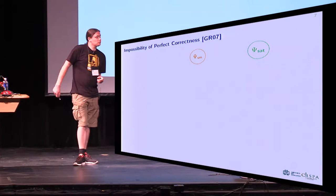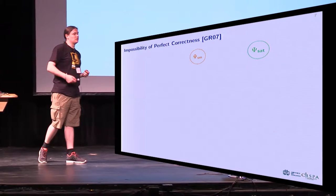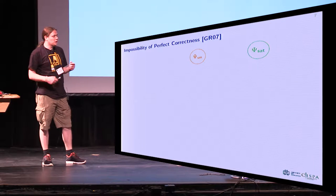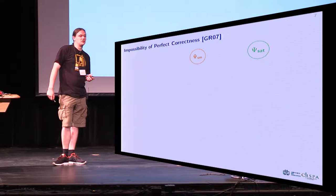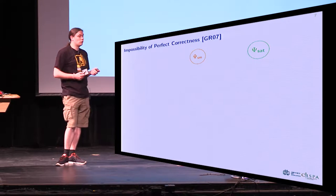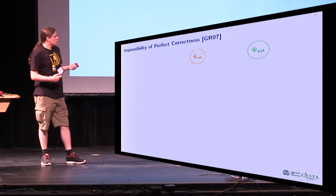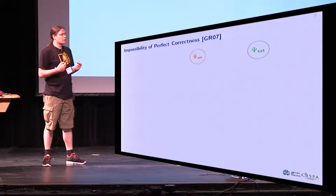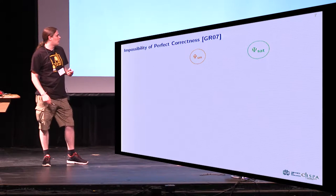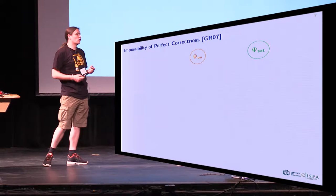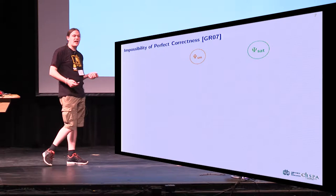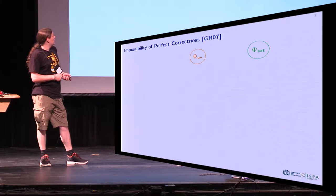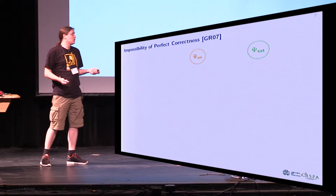So how does our proof work? The starting point is a previous proof by Goldwasser and Rothblum. What they showed was the impossibility of statistically secure I.O. with perfect correctness. They also rely on the assumption that the polynomial hierarchy does not collapse. What they do is basically show how a statistically secure obfuscator would help you in solving SAT. The SAT problem is that you are given a formula; it's either unsatisfiable or satisfiable, and you have to decide which one it is.